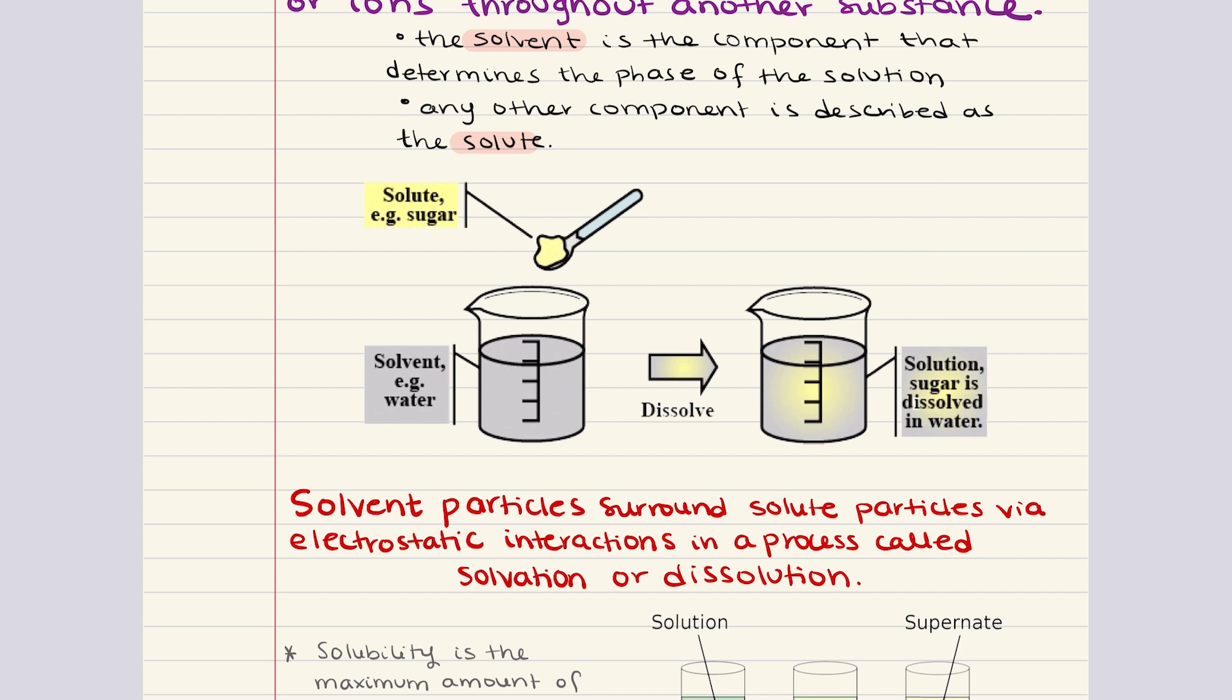Sometimes, the overall strength of the new interactions is approximately equal to the overall strength of the original interactions. In this case, the overall enthalpy change for the dissolution is close to zero, and these types of solutions approximate the formation of an ideal solution for which the enthalpy of dissolution is equal to zero.